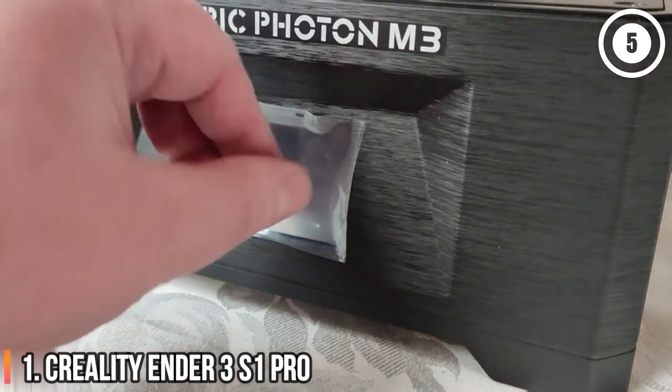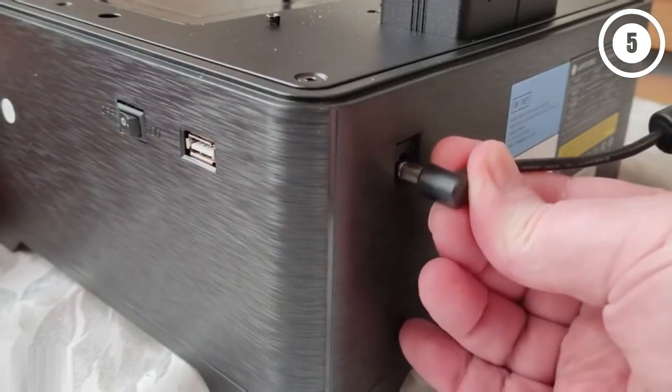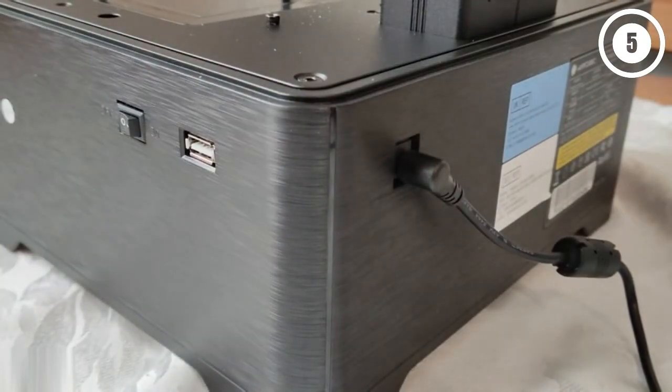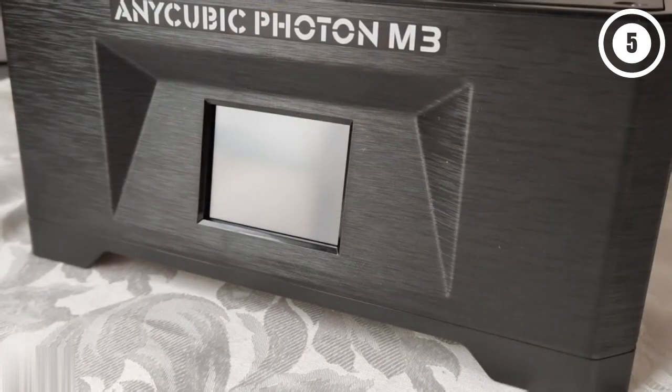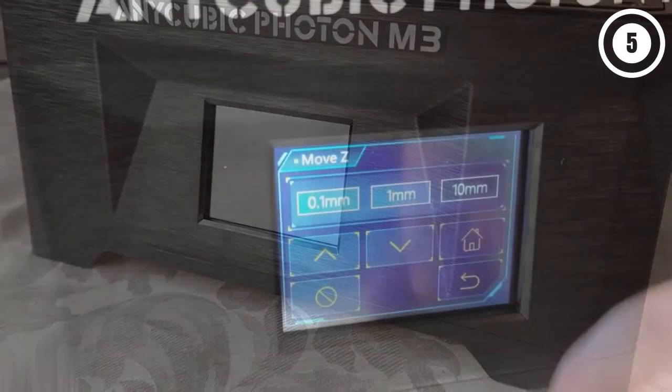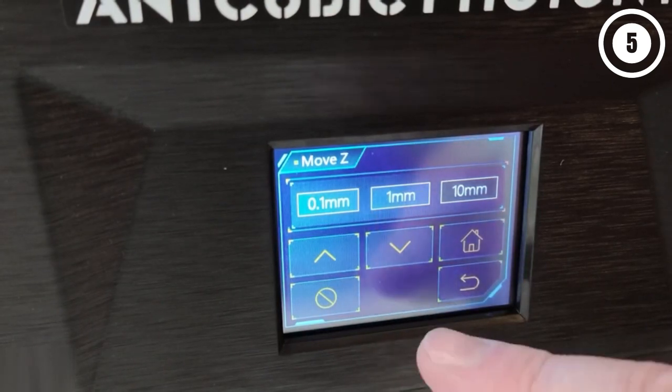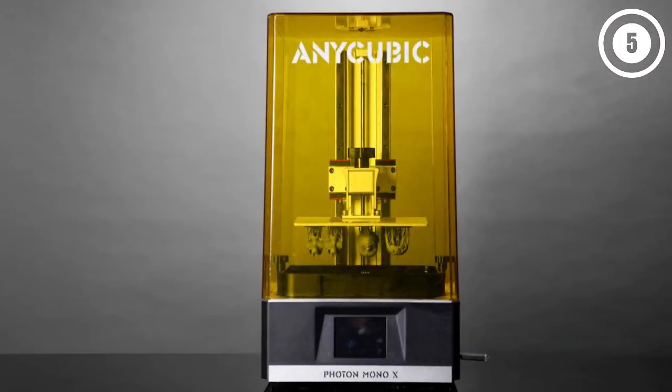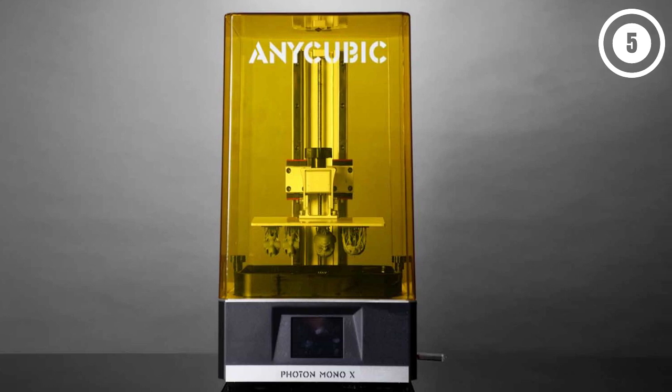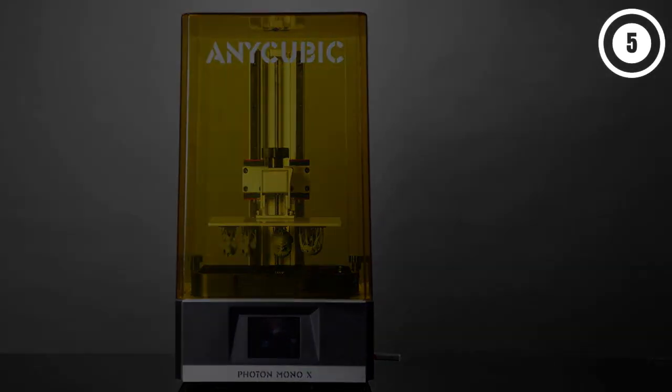Anycubic Photon M3, Best Resin 3D Printer Overall. The Anycubic Photon M3 is the best all-around resin 3D printer we've reviewed. It produces crisp details with 4K plus quality that rivals more expensive machines and has a wide build plate allowing it to make larger models than competitors in its class.